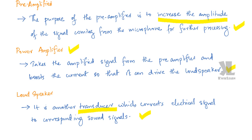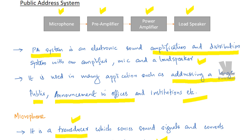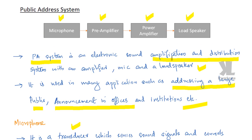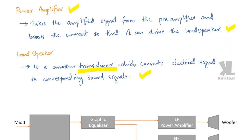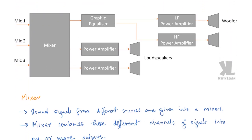This is the basic block diagram of a public address system. In a more detailed block diagram, we will also be having a mixer.